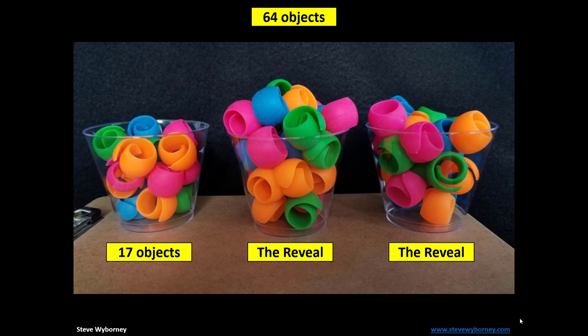The next click shows two reveal boxes at the same time, because you're about to reveal the answer to the number in the second container and the answer to the number in the third container. The reveals will take place one at a time, so on the next click, this answer will be revealed. It is 27 objects. And then this answer will be revealed. It is 20 objects.